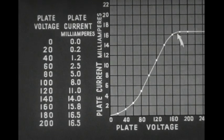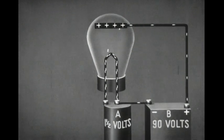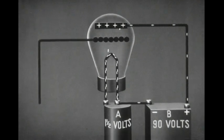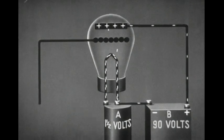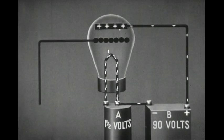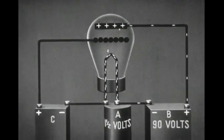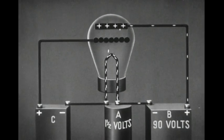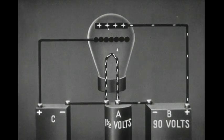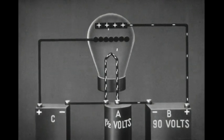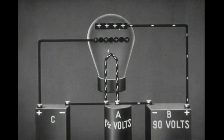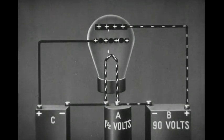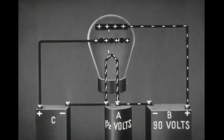A third element of wire mesh called the grid is inserted between the filament and the plate. Now let us connect the battery in the grid circuit so that the grid can be given a large positive charge. The pull of this positive charge is added to that of the plate, and more current flows.